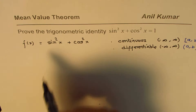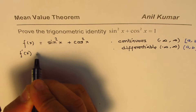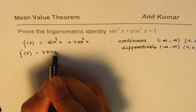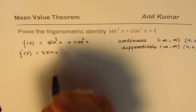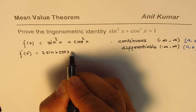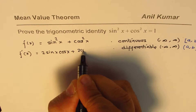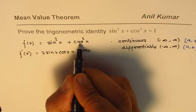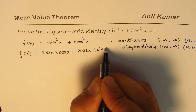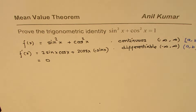Now if I find the derivative of this function, f'(x) is 2 sin x times the derivative of sin x, which is cos x, plus 2 cos x times the derivative of cos x, which is minus sin x. This is equal to 0.